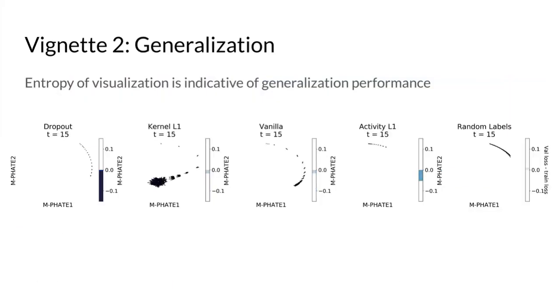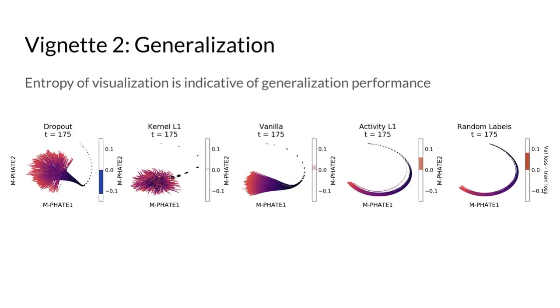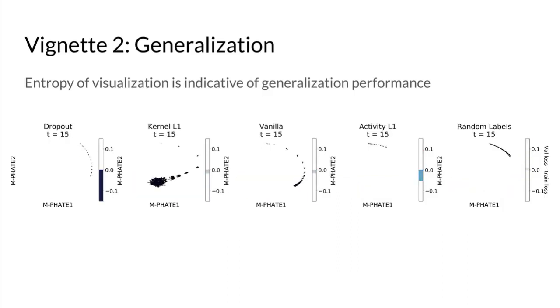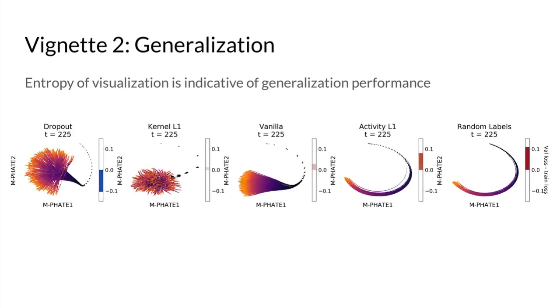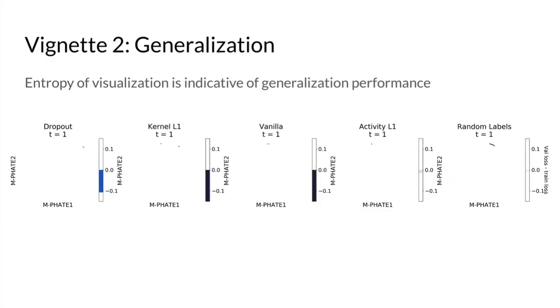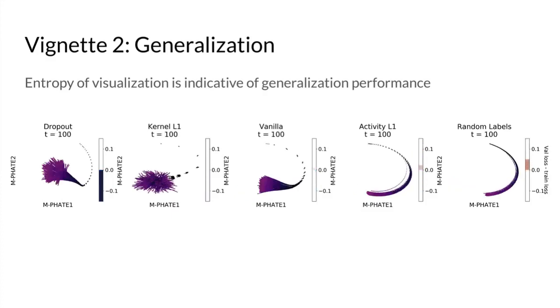We see here that the networks with the most complex visualizations, like the dropout and kernel L1 networks, also have the smallest gap between training and test loss. On the other hand, networks with the poorest generalization performance, such as activity L1 and the network with random labels, also have much simpler structure in their visualizations.